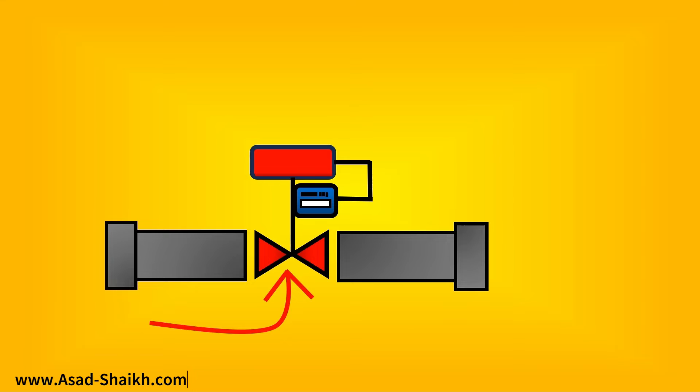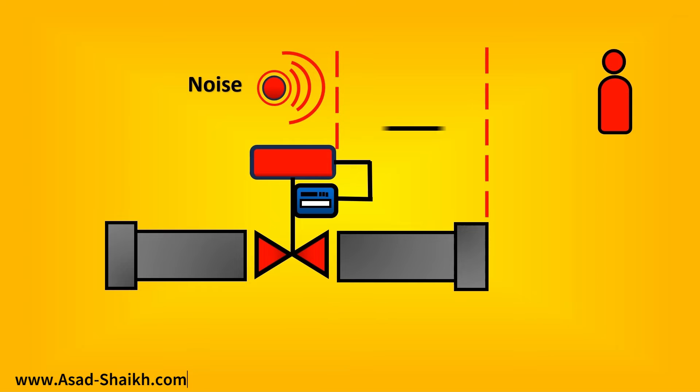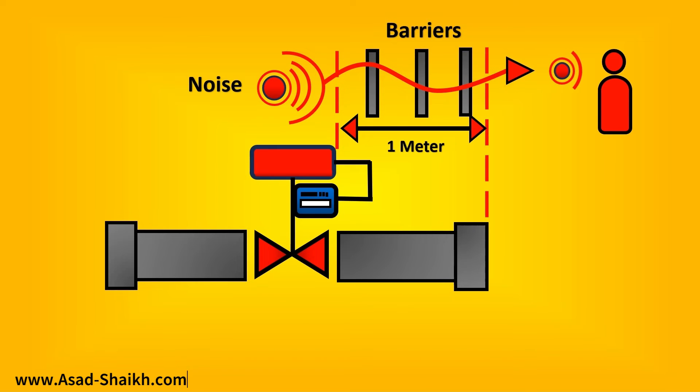If you want to do any source treatment, it has to do with some technology that happens inside the control valve. However, once the noise is generated, the noise is measured usually at a distance of 1 meter from the valve. If I put certain kinds of barriers here, the noise when it gets propagated and comes to the receiver gets attenuated, and a smaller amount of noise reaches the receiver. However, this kind of treatment is called path treatment, but the preferred method has always been source treatment as compared to path treatment.